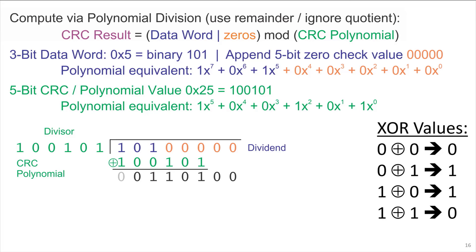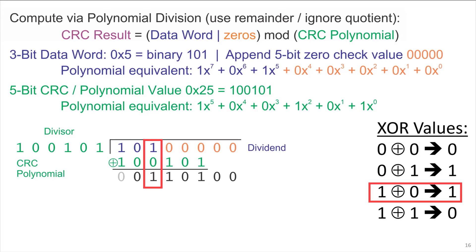At each step, one needs to cancel out the topmost digit to result in a 0, and then move one's digit to the right for the next step. As a reminder, the arithmetic facts for XOR: 1 XOR 1 is 0, 0 XOR 0 is 0, 1 XOR 0 is 1, 0 XOR 1 is 1, and so on.